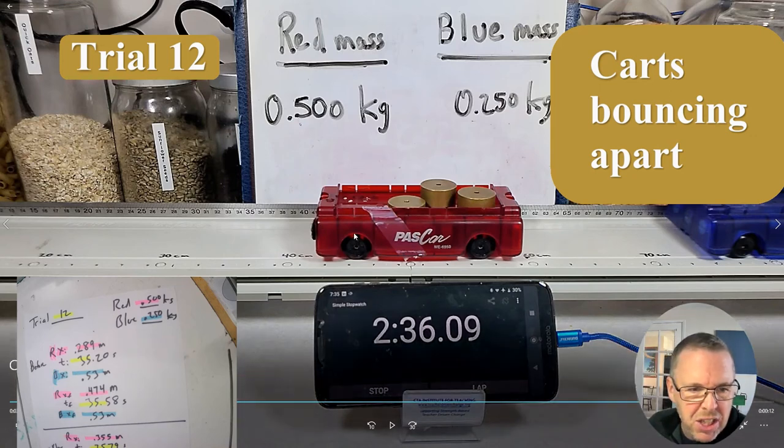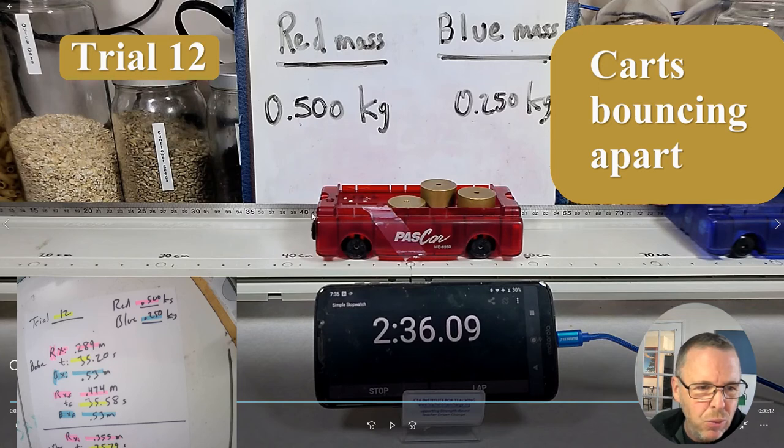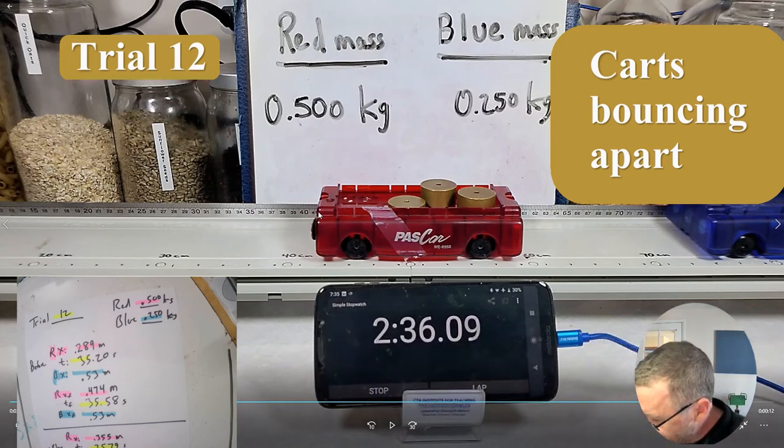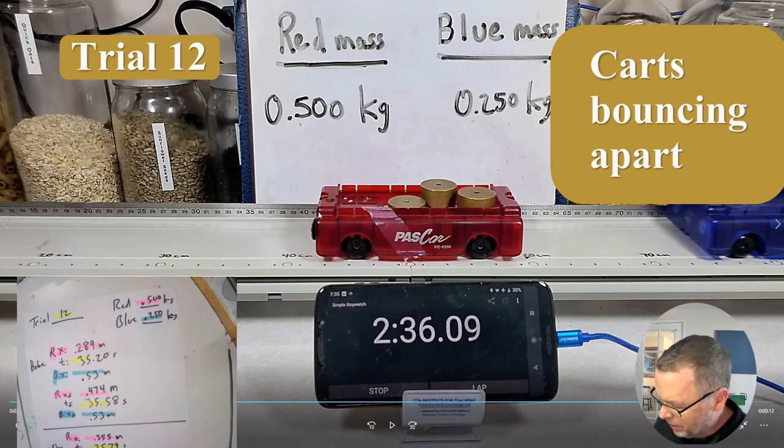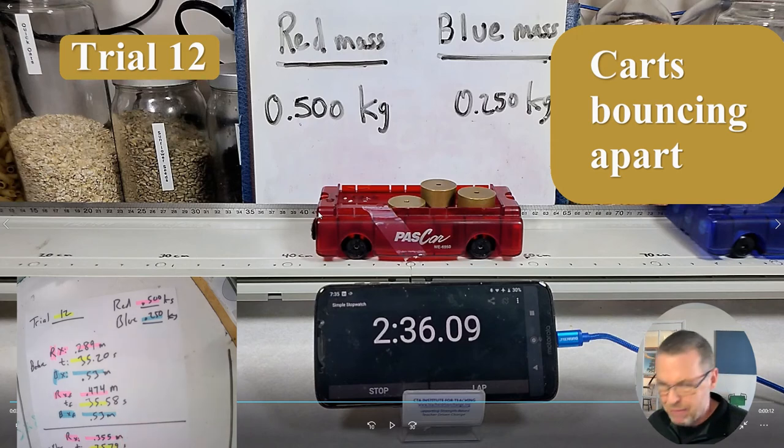And my position of the red cart afterwards looks like 41 and a smidge. I'm going to call it 41.4. Just approximating where I think the end of that cart is. So now you've got all the data. You can calculate the initial for both cars before the collision. The final for both cars after the collision.